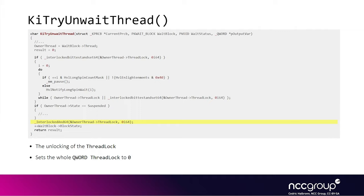Originally we saw this logic and thought the ability to write zero somewhere was too limited — we thought it would be more powerful to have a robust read-write primitive. We didn't know that just writing the value zero to somewhere in the Windows kernel would allow us to actually elevate privileges. But eventually, after we wrote our entire exploit, we found a presentation from Kaspersky that mentioned how the zero-day exploits exploited this exact same bug. They used a different trick than us, and it's what we're going to explain now because it's easier to understand and significantly more powerful than what we used.